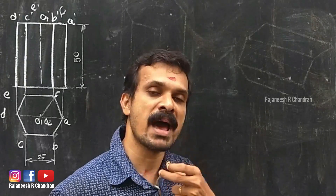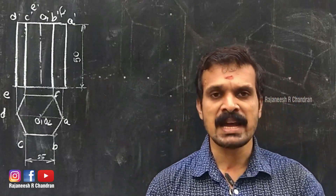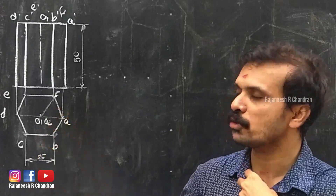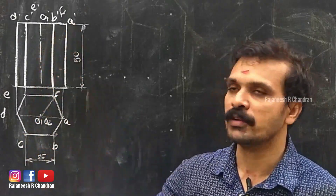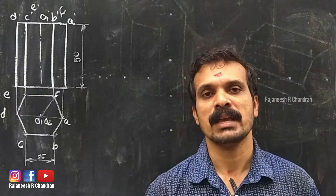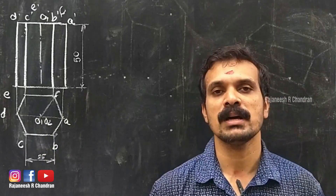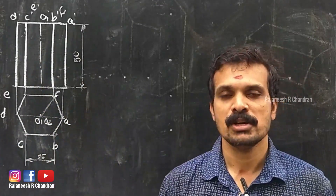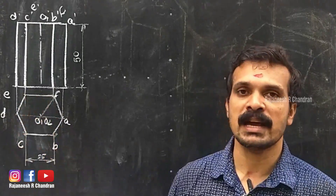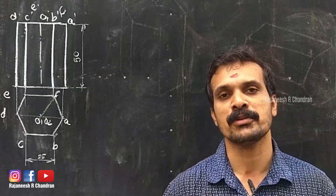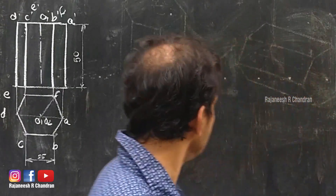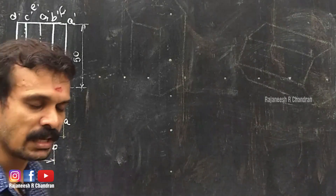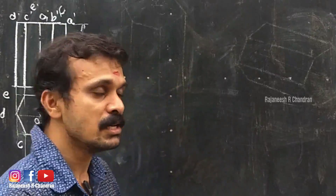The first condition is axis perpendicular to the ground, and the second condition is axis parallel to its face. When the axis is perpendicular to the ground, in the top view you can see the hexagon, and in the front view you can see the lateral face. So in the orthographic projection, the top view shows the hexagon and the front view shows the lateral face. Since it is placed on the ground with the axis perpendicular, the top view — the hexagon — is in the HP.